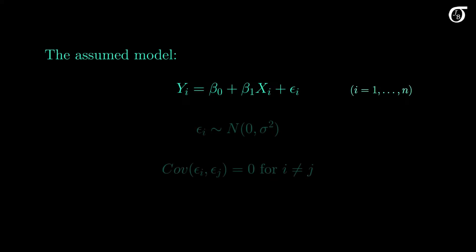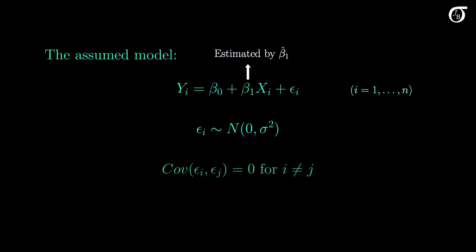Recall our simple linear regression model, where we estimate the parameters beta0 and beta1 with beta0 hat and beta1 hat. Epsilon is a random error term, and we make certain assumptions about it. We typically assume each epsilon is a random variable that is normally distributed with mean zero and constant variance sigma squared. We also assume the epsilon terms have zero covariance, or in other words, they're uncorrelated.